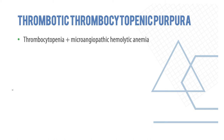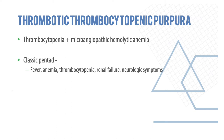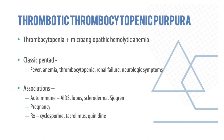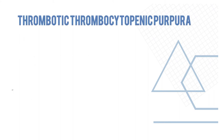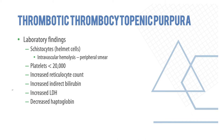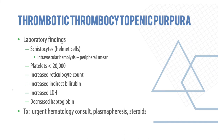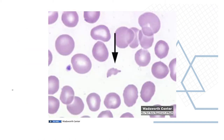Thrombotic thrombocytopenic purpura (TTP) involves thrombocytopenia with microangiopathic hemolytic anemia. It is a pentad of fever, anemia, thrombocytopenia, renal failure, and neurological symptoms. Associated conditions include AIDS, lupus, scleroderma, Sjögren's syndrome, and even pregnancy. Treatment is by cyclosporine, tacrolimus, and clonidine. Lab findings include schistocytes (also called helmet cells), platelets less than 20,000, increased reticulocyte count, increased indirect bilirubin, increased LDH, decreased haptoglobin. Treatment requires urgent hematology consult, plasmapheresis, and steroids.